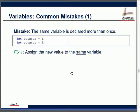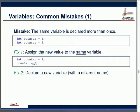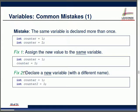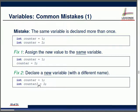Fix number one: have a single variable — int counter assigned to 1, then change that to 2. There's only one placeholder. Fix number two: if you do want two counters, use int counter and int counter2 with different names. Which fix to use? Completely depends on what you need — if you need one counter, fix one; if you need two, fix two.